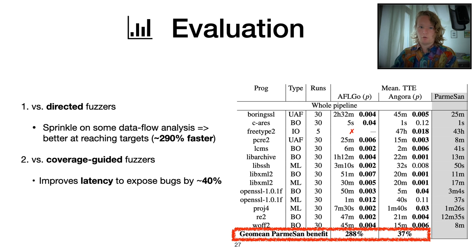For the evaluation, first of all, we evaluate against existing direct gray box fuzzers such as AFLGO. And we see that adding dynamic data flow analysis and a dynamic control flow graph significantly improves how fast we can reach certain targets by up to 290%.